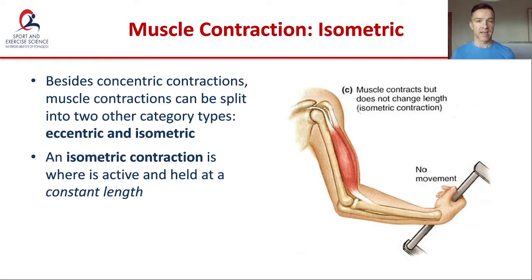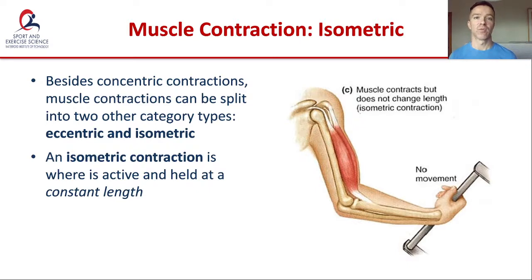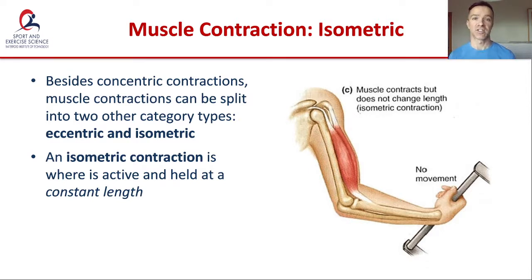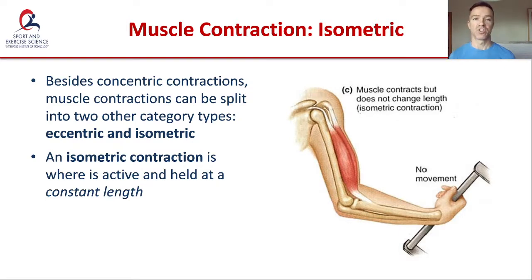To summarise: antagonistic pairs are pairs of muscles that work around a joint to create movement. Within the antagonistic pair, the agonist is the muscle that causes movement; the opposing muscle is the antagonist. When we want to return the joint to its original position, those roles are reversed. There are three types of muscle contraction: a concentric contraction when a muscle shortens under load; an eccentric contraction when a muscle lengthens under load; and an isometric contraction when a muscle is active but there is no change in length.